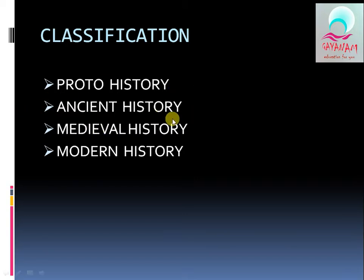The five parts are: first, Proto History; second, Ancient History; third, Medieval History; fourth, Modern History; and fifth, Post-Modern History.